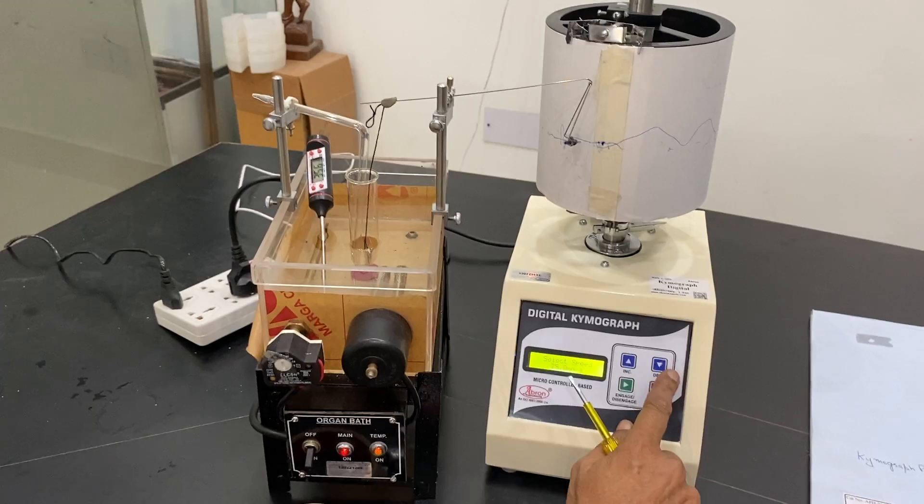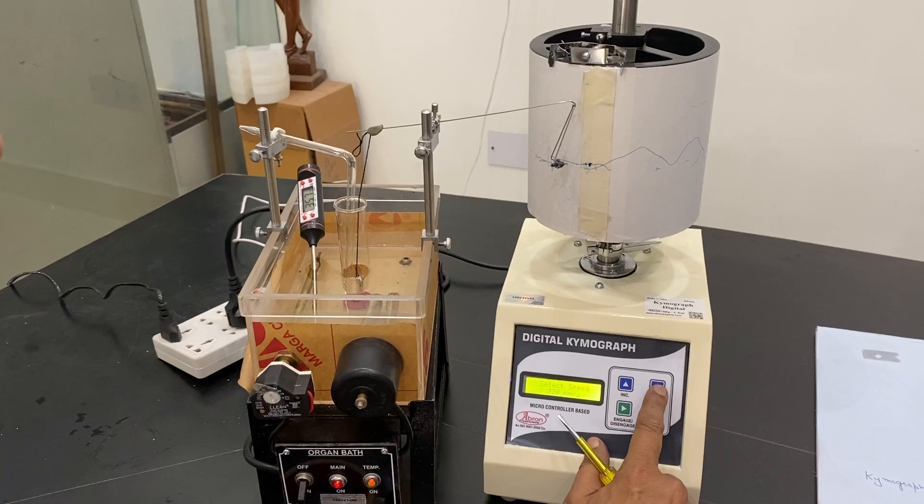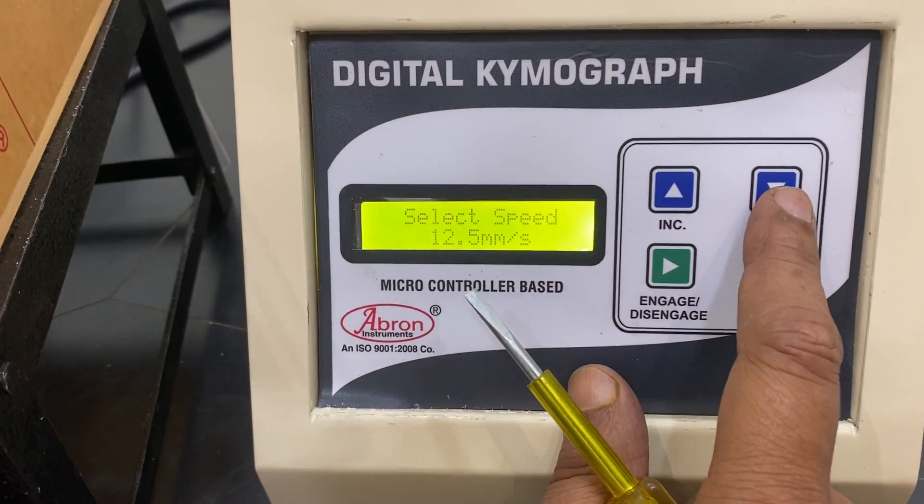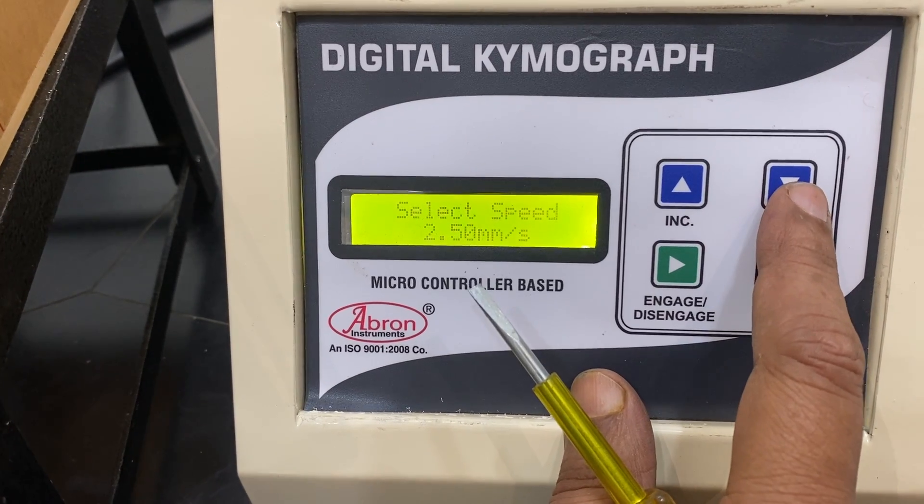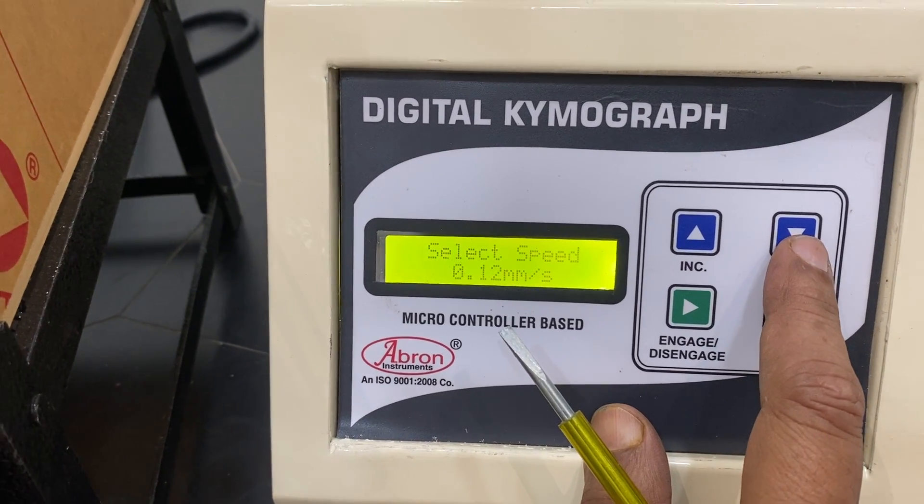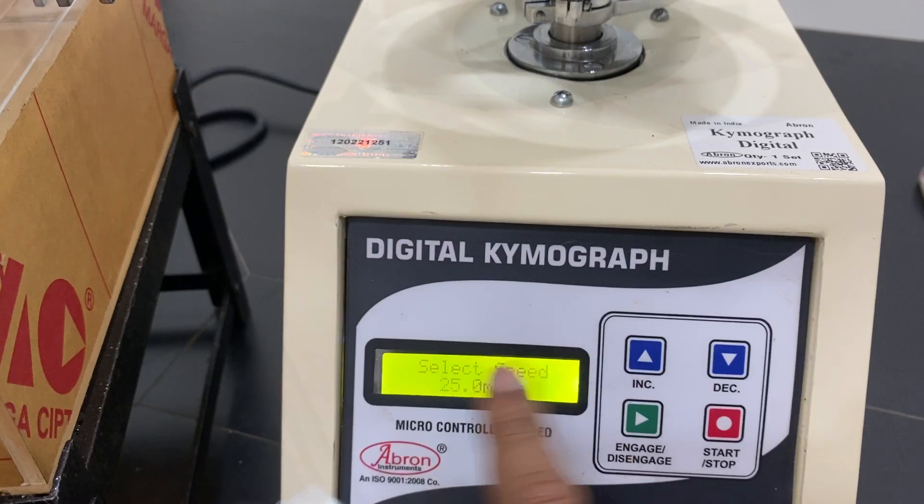Here we can select the speeds by pushing up on 320, 640, 320, then 25mm, and then you can go to 2.5, 1.25, 0.25, 0.12. I am using it on 25mm.